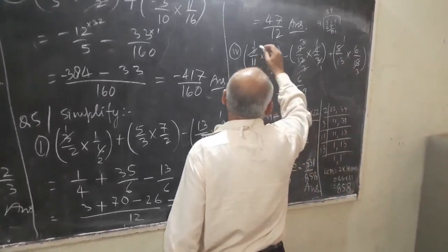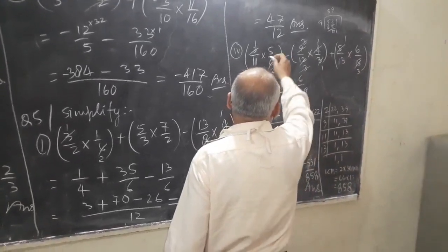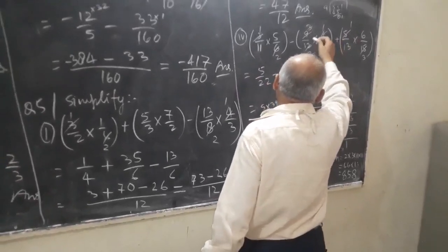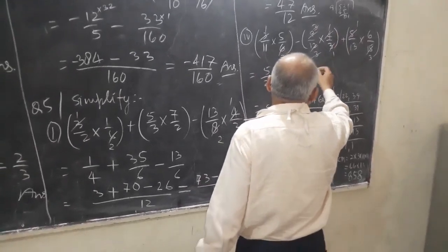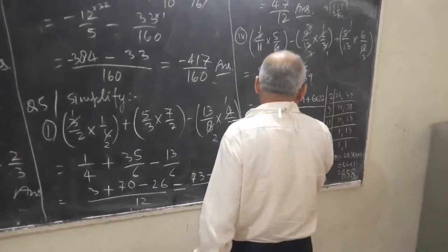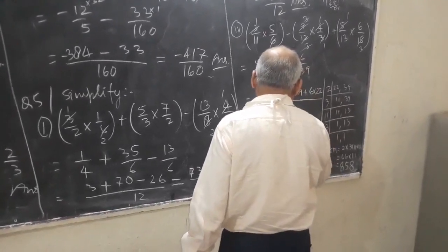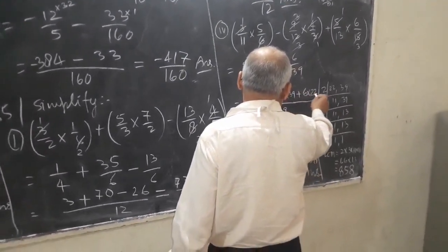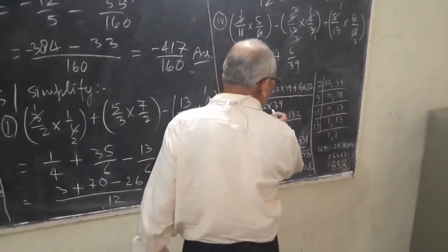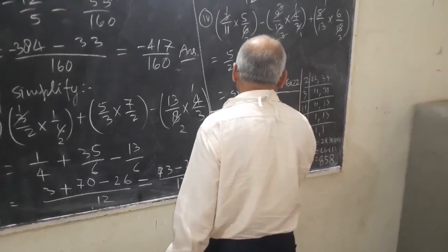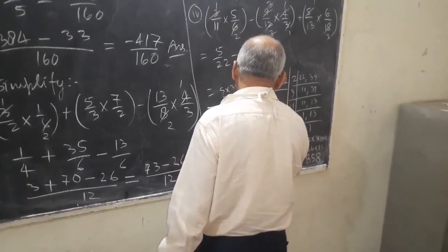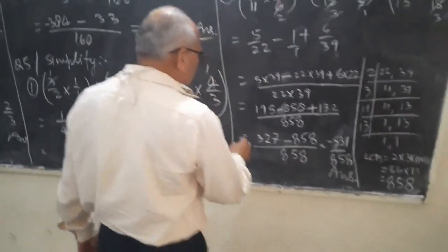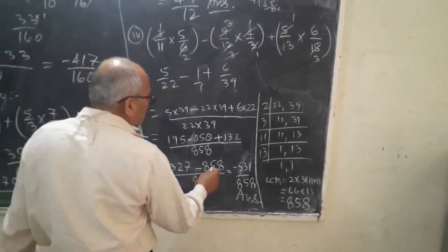Simplifying: 3 into 0 gives 3, and 6 gives 2, so it will be equal to 5 upon 22 minus 3, and 4 upon 12 gives 3 upon 3, that is 1, plus 6 upon 39. We take LCM of 22 and 39, which is 858. So 5 into 39 minus 22 into 39 plus 6 into 22, all divided by 858, giving 195 minus 858 plus 132 divided by 858, equal to 327 minus 858.